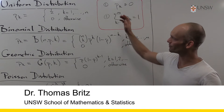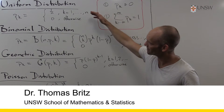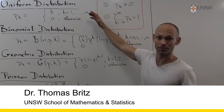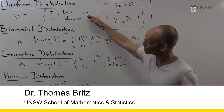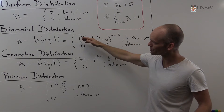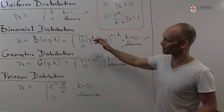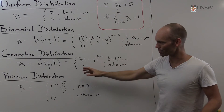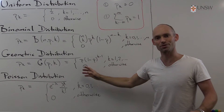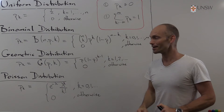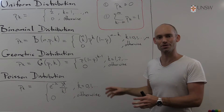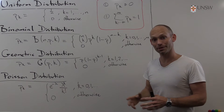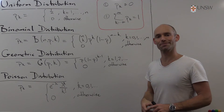In this problem we have four functions — four real functions: the uniform distribution, the binomial distribution, the geometric, and also the Poisson distribution. The purpose of this problem is to show that they are probability distributions.